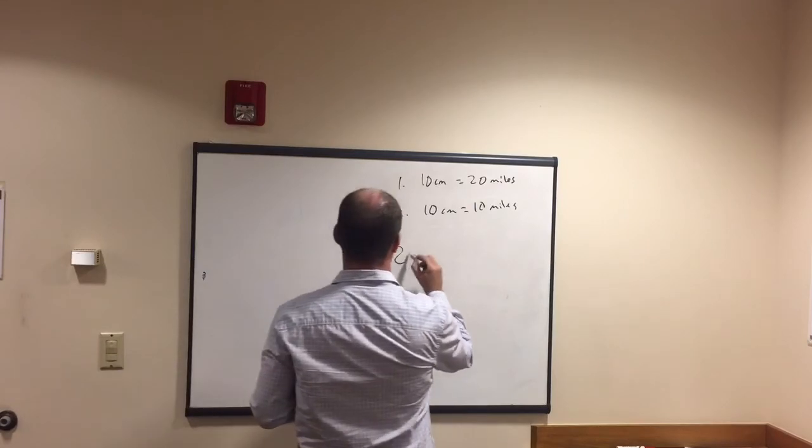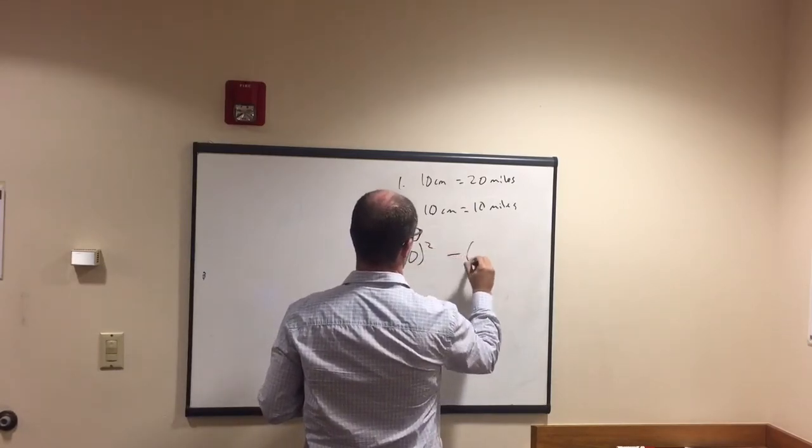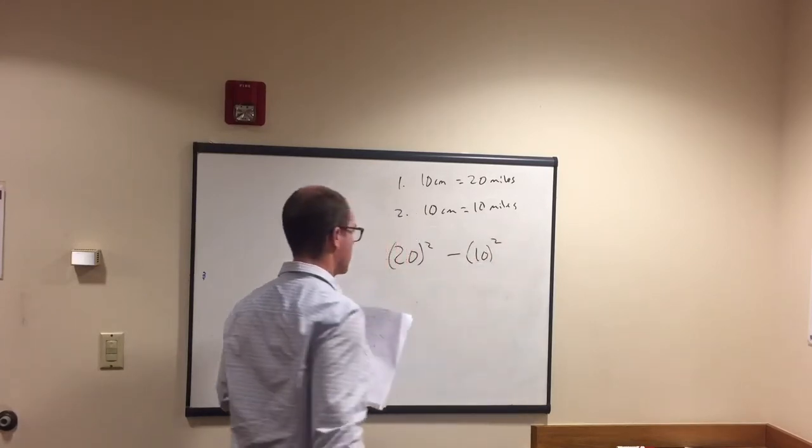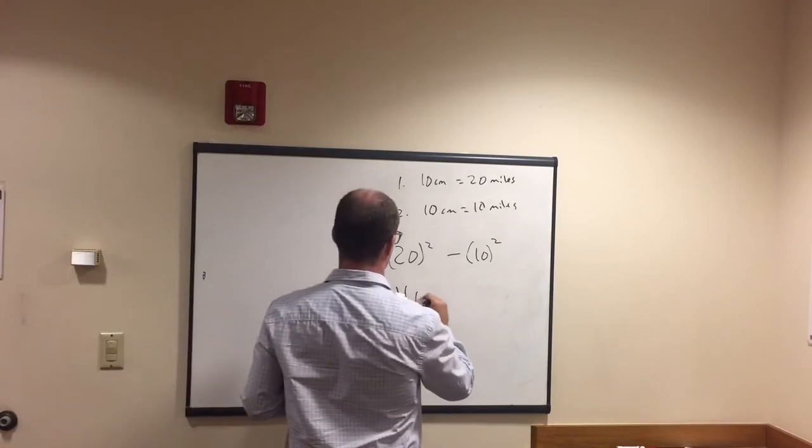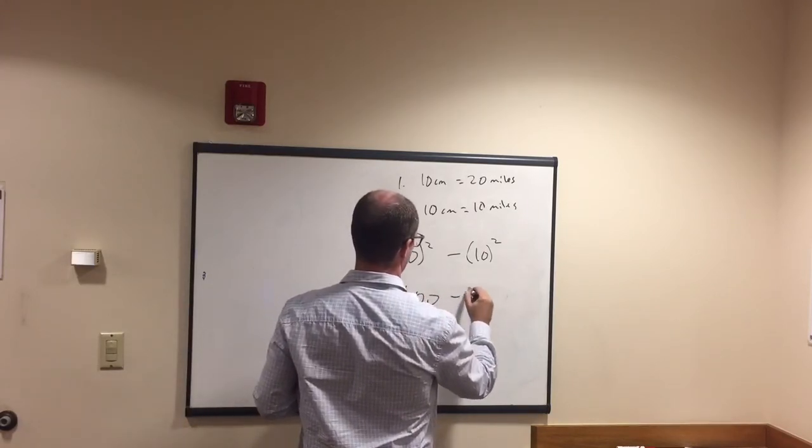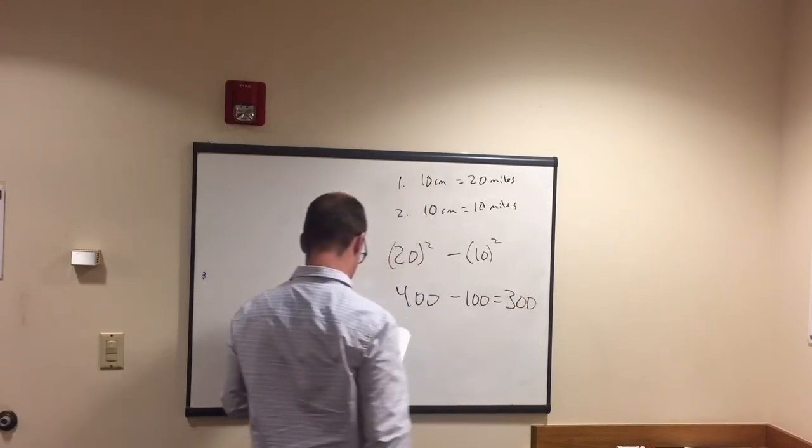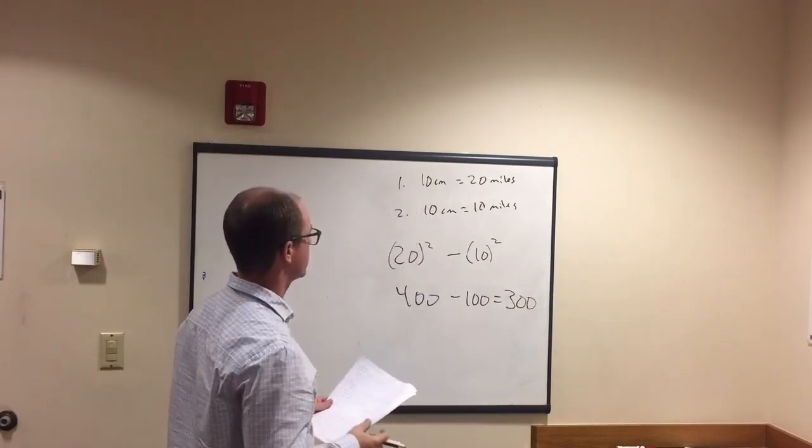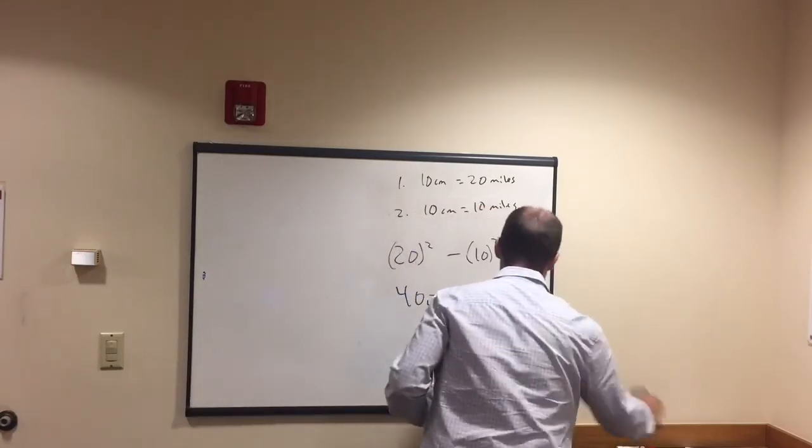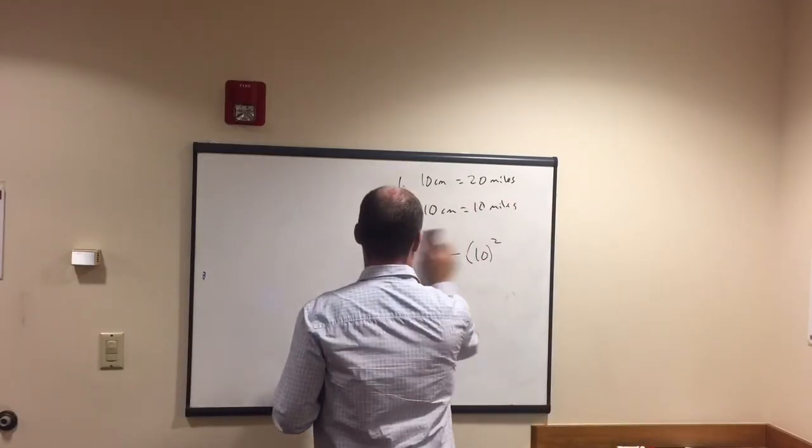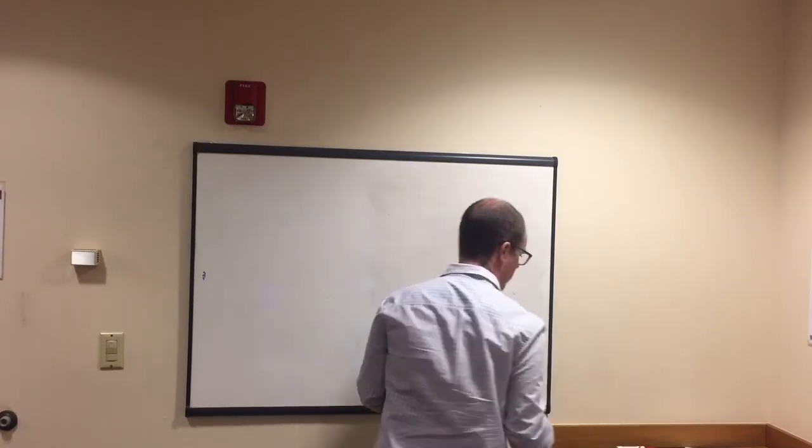So we have 20 squared minus 10 squared. 20 times 20 is 400. Minus 10 squared is 100. 300 square miles. That's the difference. That's square mileage.